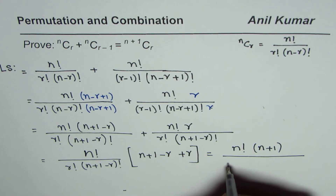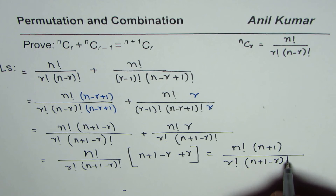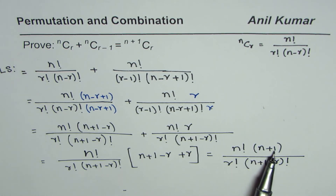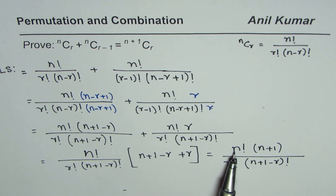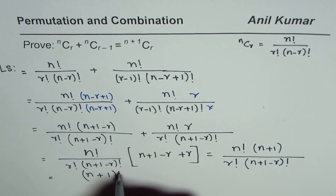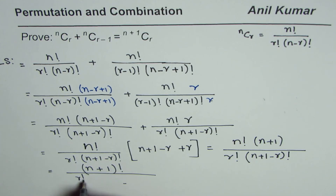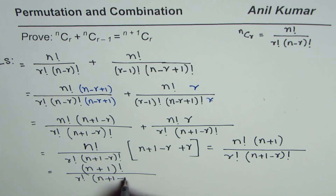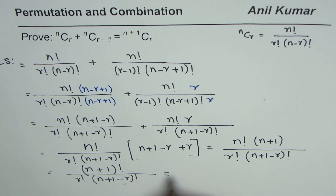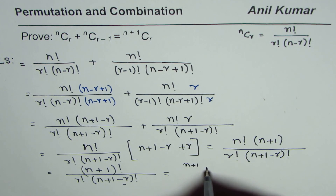The denominator for us is r factorial times n plus 1 minus r factorial. Now n factorial times n plus 1 is n plus 1 factorial. So this becomes n plus 1 factorial divided by r factorial times n plus 1 minus r factorial.